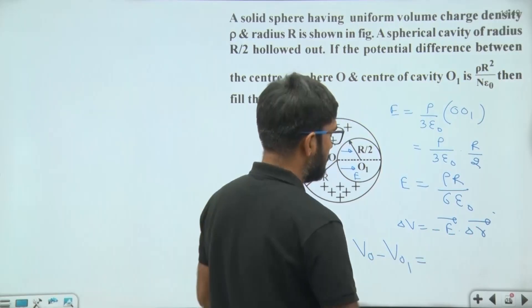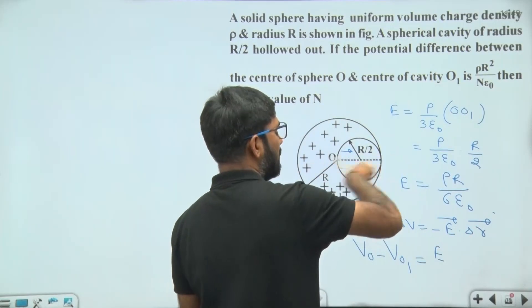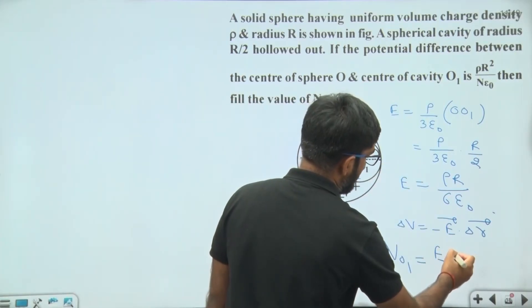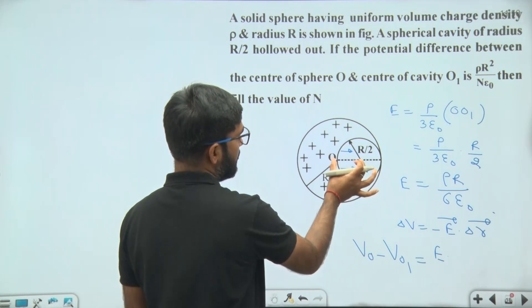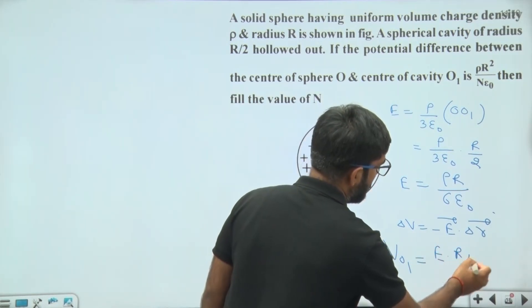Then we will write the positive value of this term. This will be equal to electric field E into delta R. We will take angle 0 degree. So E into delta R. Value of delta R is this distance between O and O1 and this will be equal to R by 2.